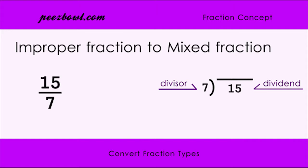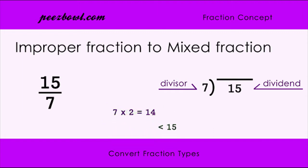To start with division, we need to think of a whole number to multiply with 7 so that the result of the multiplication is closer to 15 but not more than 15. In our case, if we multiply 7 with 2, the result is 14, which is less than 15. But if we multiply 7 with 3, the result is 21, which is more than 15. Hence, we are multiplying 7 with 2. Now we will write 2 above the dividend and 14 below the dividend.